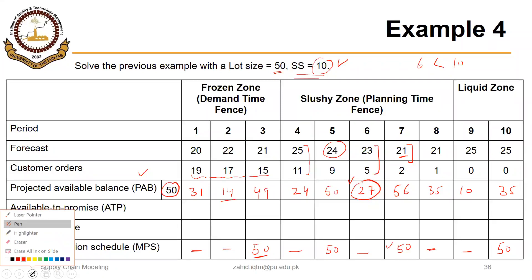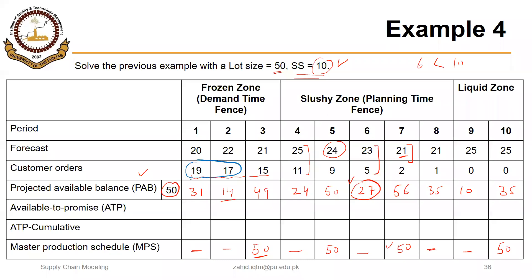So then available to promise is calculated using the same logic. For period 1 that will be equal to 50 plus 0 minus customer orders till next MPS, so 50 minus 36 will be 14. Then this 50 and customer orders till next MPS — 15 plus 11 — so 50 minus 26 will be 24. Then we have this MPS in period 5, so customer orders till next MPS are 9 plus 5, so 50 minus 14 will be 36. Then this 50 and customer orders till next MPS are 2 plus 1, so 50 minus 3 will be 47.